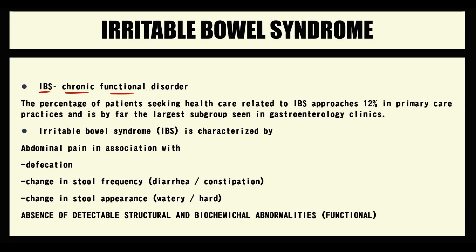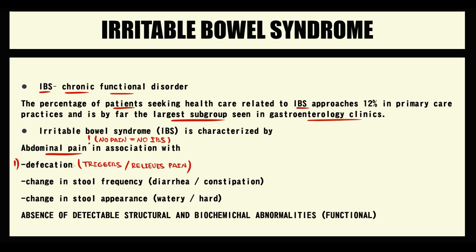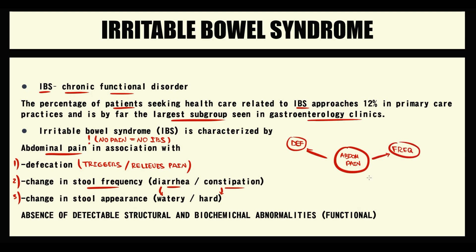Irritable bowel syndrome is a chronic functional disorder — it's the most common disorder of the GI tract. IBS has a few cardinal symptoms. The major symptom is abdominal pain; if abdominal pain is absent, it's not irritable bowel syndrome. Abdominal pain is usually triggered or relieved by defecation. The second feature is changing stool frequency — it can be diarrhea or constipation. With diarrhea, stool becomes watery; with constipation, stool becomes hard. The third criterion is changing stool appearance.